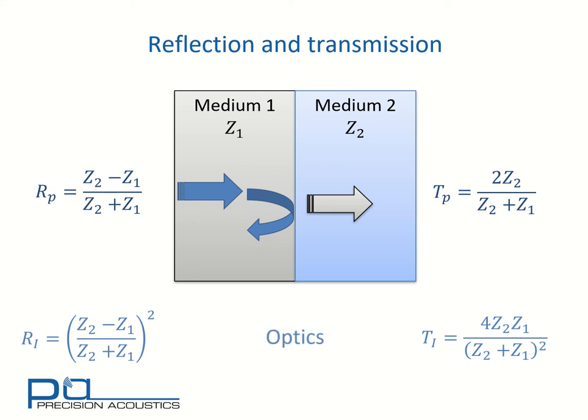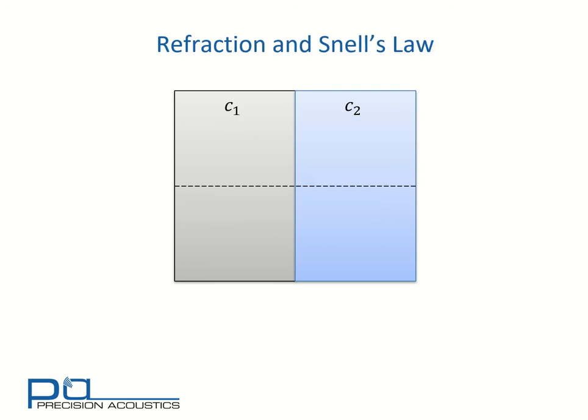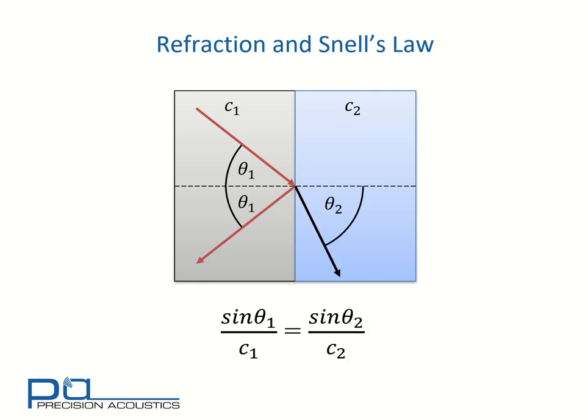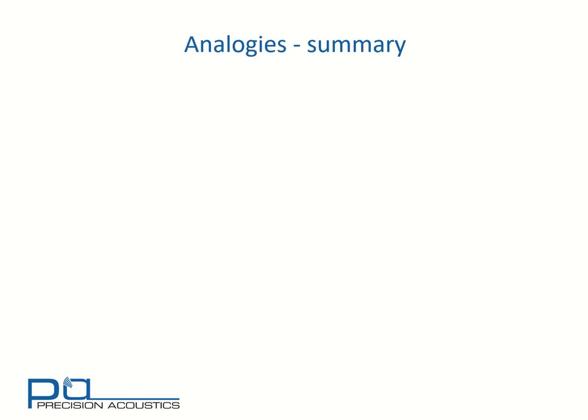Similarly, if we look at refraction and Snell's law, as long as we express Snell's law in terms of speeds of sound, or speeds of light, or speeds of electromagnetic waves rather than refractive indices, we note that we've got a very similar arrangement again. So in this case, when we have an incident wave at theta one and a refracted wave at theta two, Snell's law tells us that sine of the angle over the wave speed is equal on both sides. This again is exactly what we see in optics.